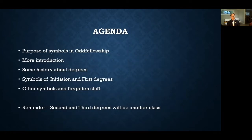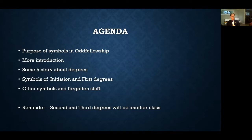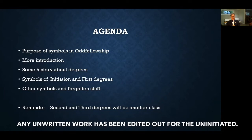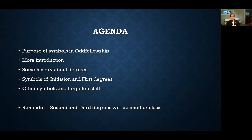The class is broken into parts: we'll talk about the purpose of symbolism, do a bit of history about the degrees, then dive into each of the symbols of Initiation and First Degree. At the end, I'll cover some symbols no longer in the degrees but still visible in the hall, plus some fun stuff from the 1800s initiation degree. There will also be a Second and Third Degree symbolism class, likely in the fall when more people from Bastion and Columbia have progressed through the degrees.